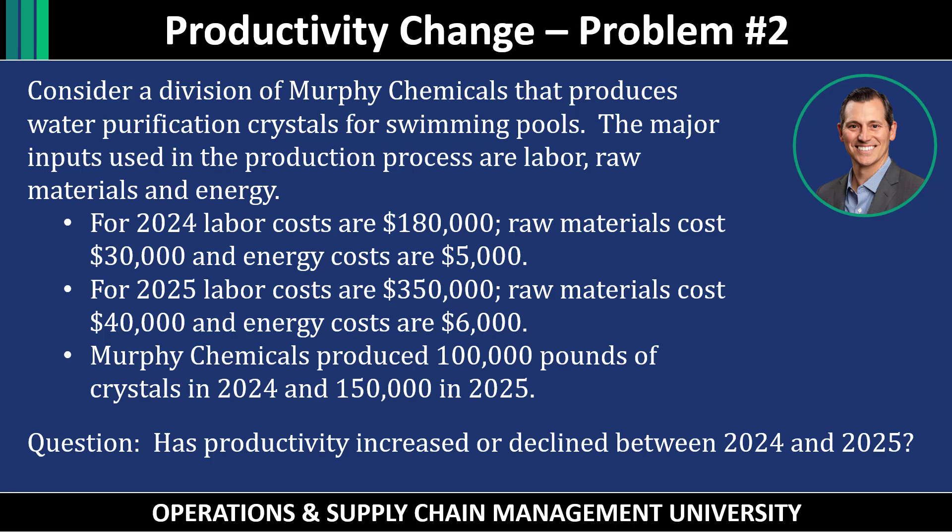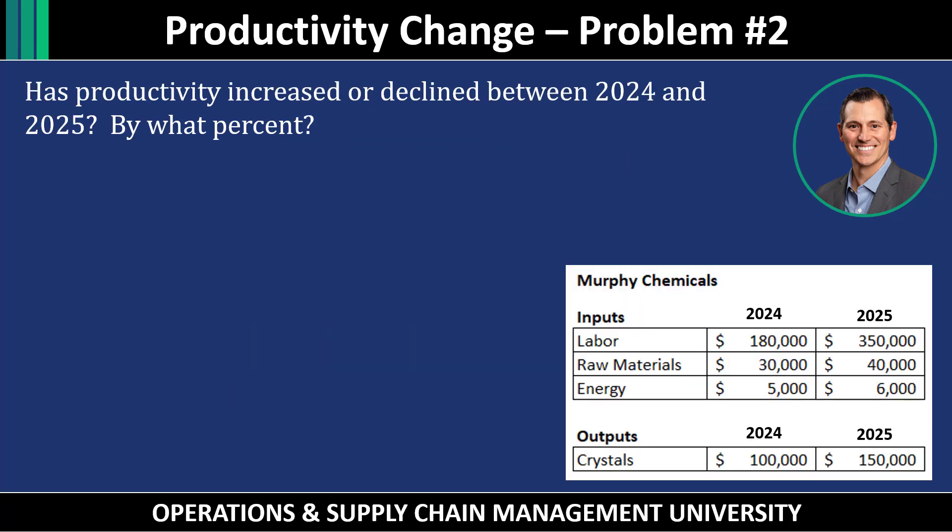Two things to point out before solving. First, just because outputs increased from 100,000 to 150,000 pounds does not mean productivity increased — production did, but productivity may not have. Second, this question asks for multi-factor measures because it gives you three different inputs. Those inputs — labor, raw materials, and energy — along with the outputs (crystals) are shown for both 2024 and 2025.